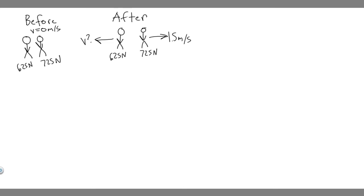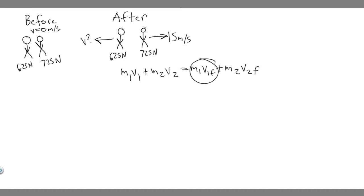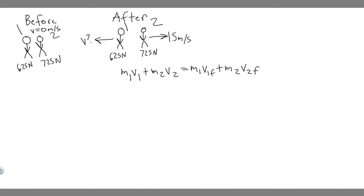We're going to solve for it using the law of conservation of momentum. The formula is: M1·V1 + M2·V2 = M1·V1_final + M2·V2_final. What we should realize is that V1 and V2, the initial velocities, are both zero because they're not moving before. So this whole left side of the equation equals zero — zero times anything is zero. So the left side goes away.